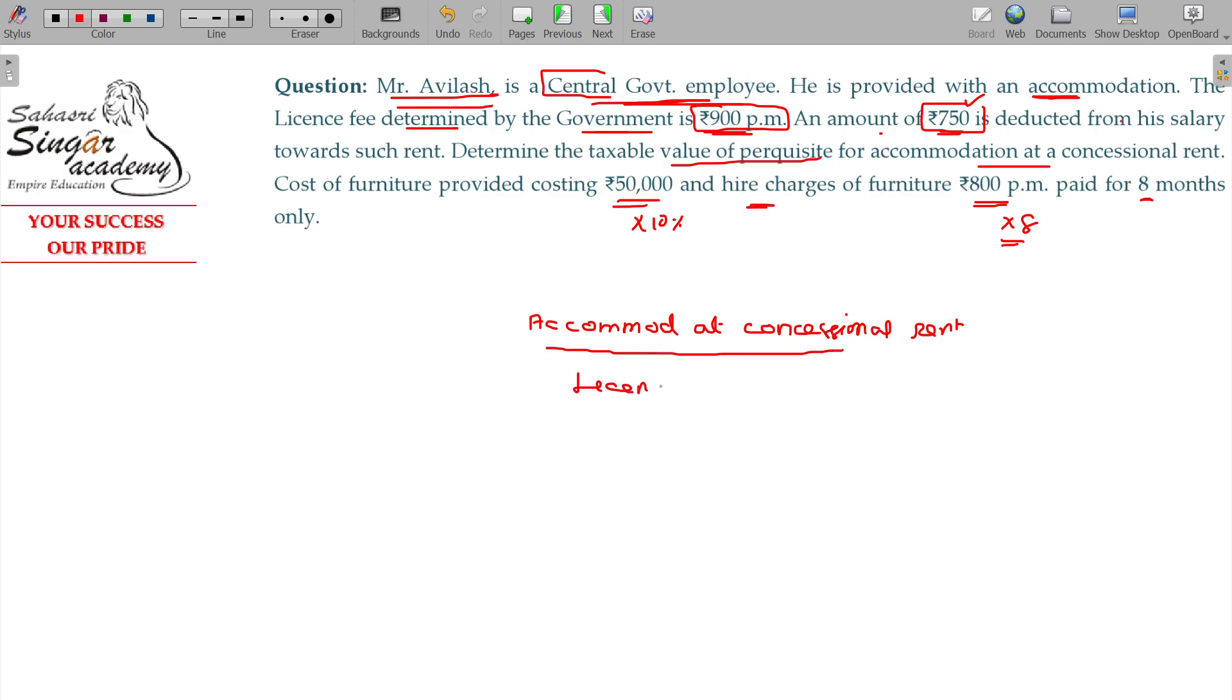License fee: 900 per month into 12 months equals 10,800, minus amount recovered. How much is recovered? 750 per month. In the 12 months, 9,000 recovered. Balance: 1,800.